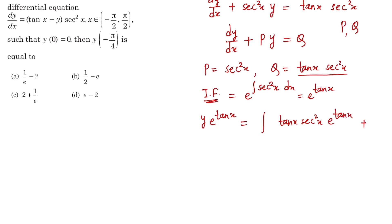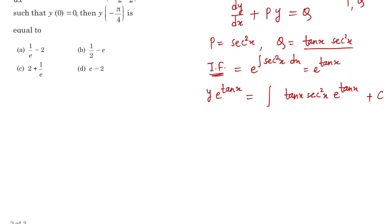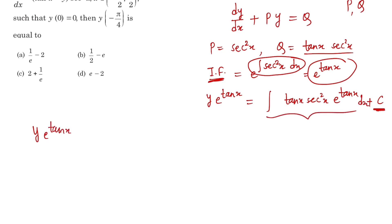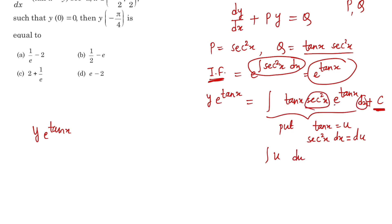Plus constant c, where c is a constant of integration. Note that we do not include any integrating factor while finding this constant since we are adding it in the final answer. To evaluate the integral, let tan(x) = u, so sec²(x) dx = du. The integral becomes the integration of u·e^u du.